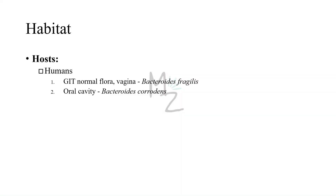Habitat and hosts: humans are its hosts. Bacteroides Fragilis is found in the human colon, numbering approximately 10 to the 11th per gram of feces, and is also found in the vagina of approximately 60% of women. There is another species — Bacteroides corrodens — which is found in the oral cavity.